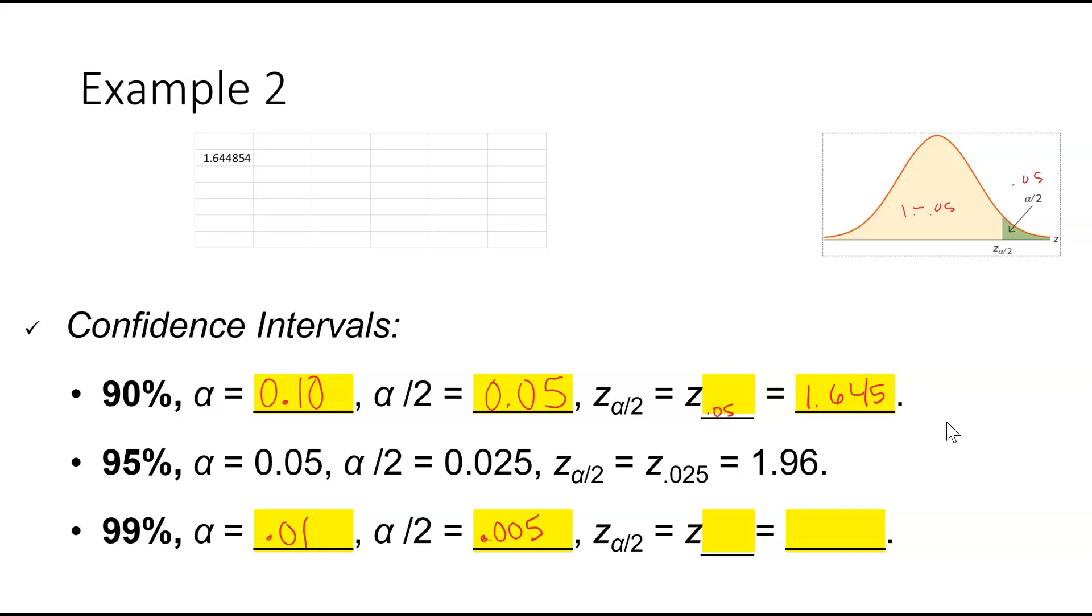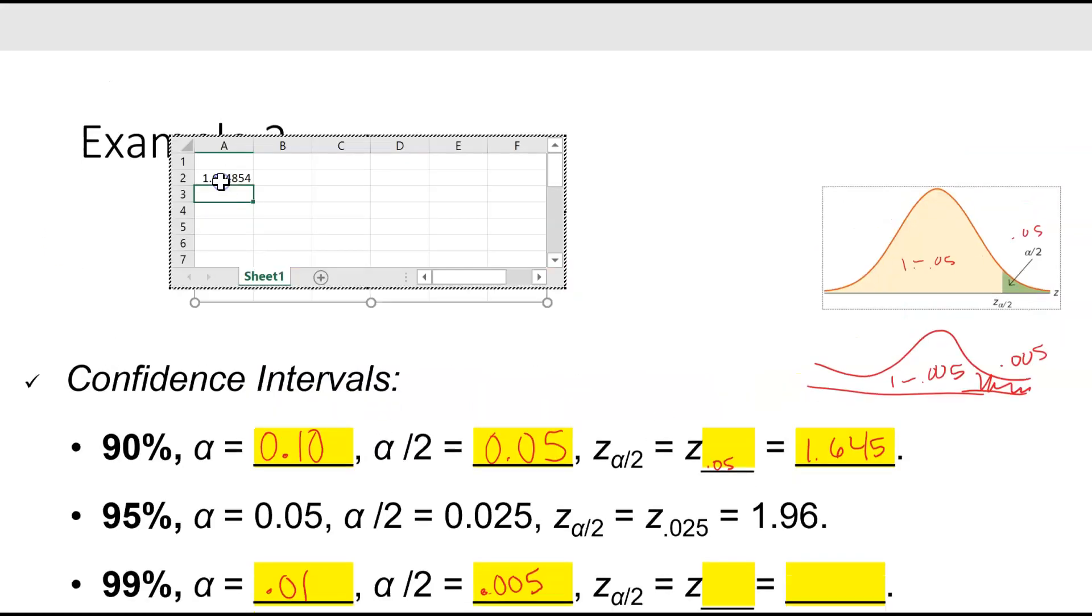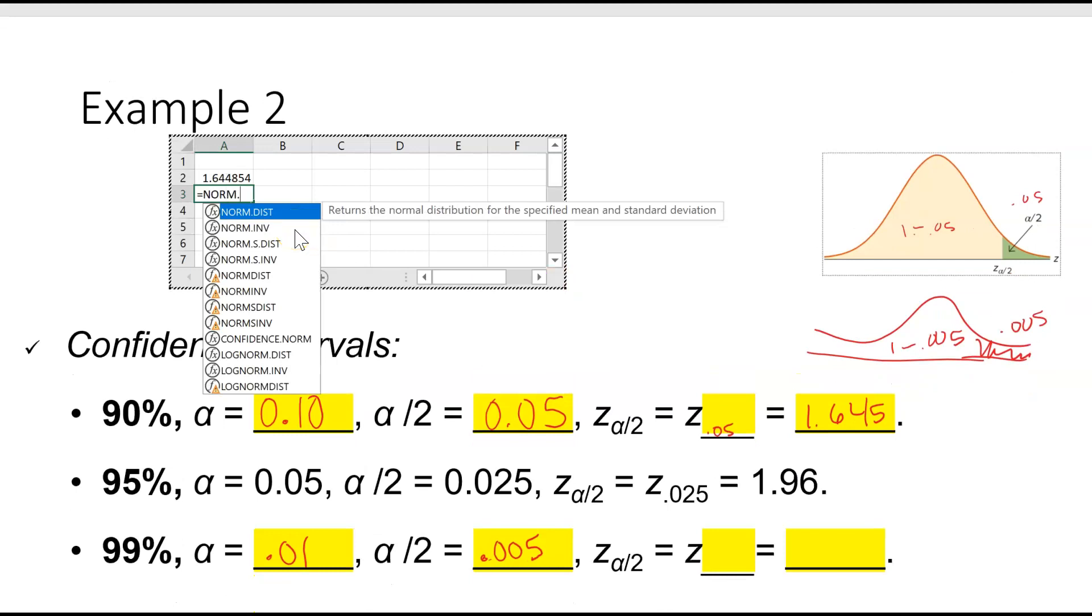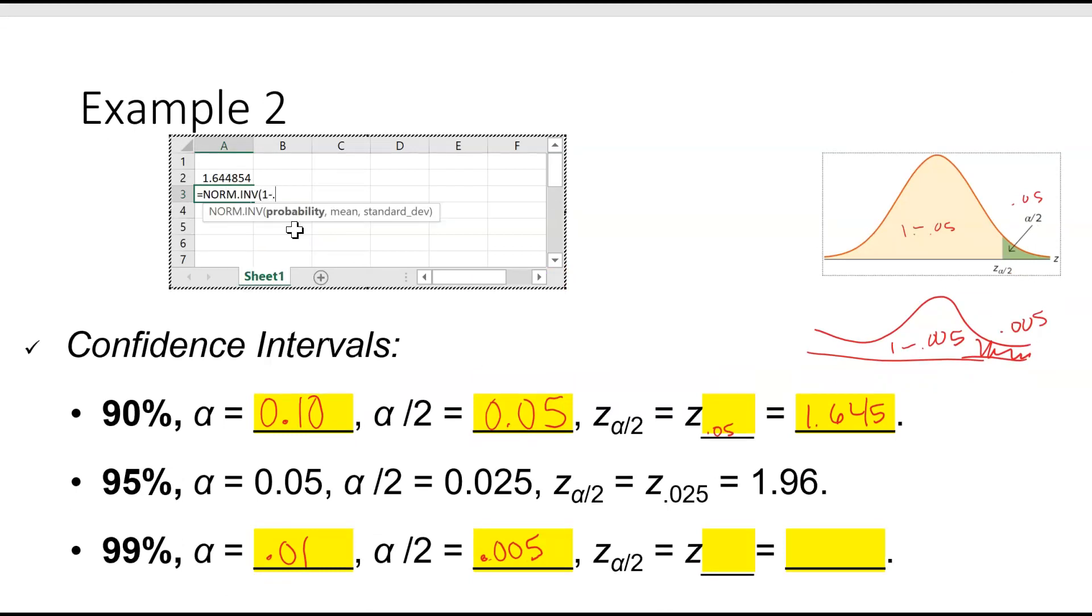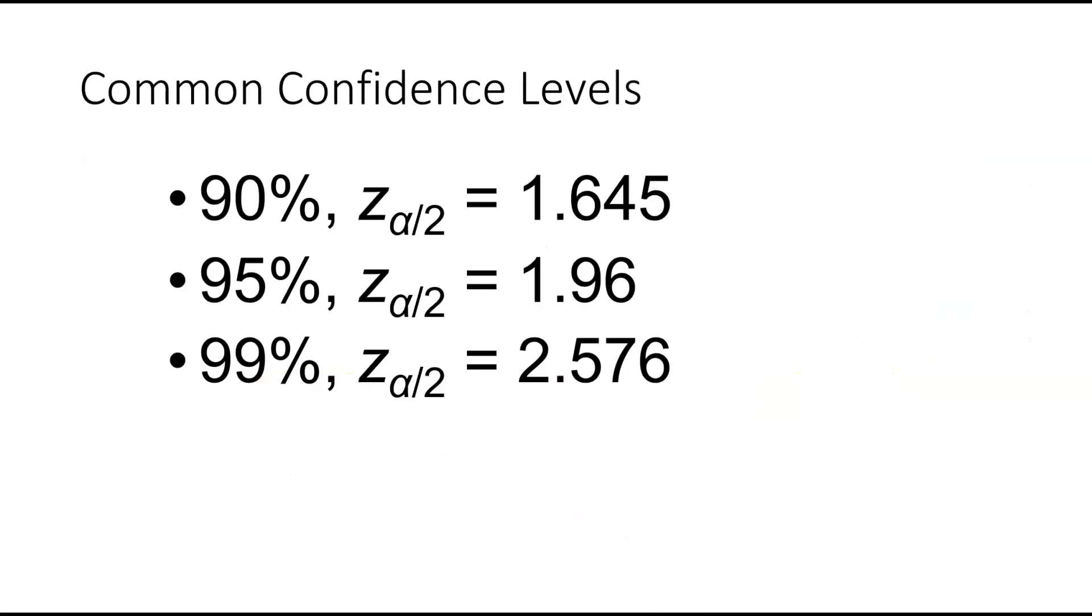We can do the same thing with 99%. We're left with 1% or 0.01. When we divide that by 2, we get 0.005. And then if we want to do the same thing, now we're saying that inside this little tail over here is 0.005. We'll do norm.inv, 1 minus 0.005, and it's standard, so we do 0, 1. So we get a z-score of 2.576. And I would commit these to memory or write these down somewhere. These are really common confidence levels, and we will be using those often.